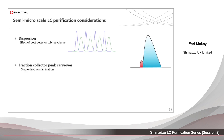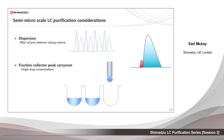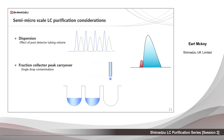Fraction collection peak carryover: removing the last droplet from the tip of the needle might seem minor, but the droplet size can be large relative to the size of the well. So as the collector moves, contamination can be significant if the droplet falls into the next well. Reducing the inner and outer diameter of the probe's tubing creates a smaller droplet, thus reducing peak carryover.